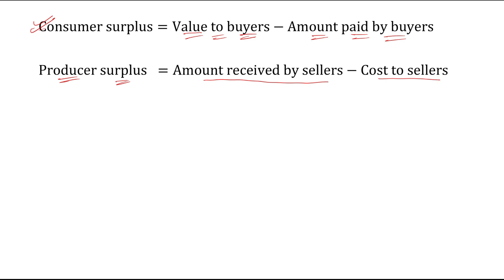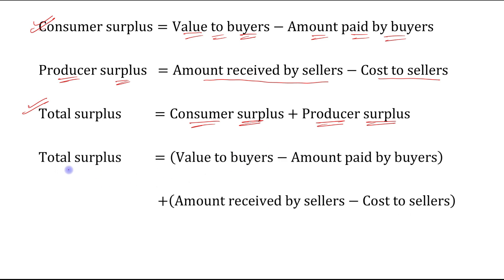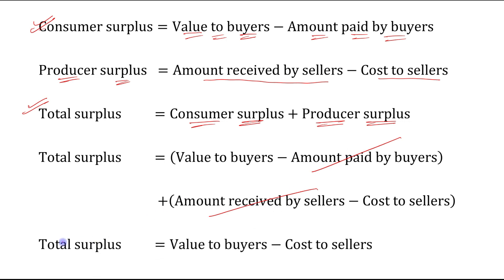Total surplus will be equal to the sum of consumer surplus and producer surplus. That means total surplus equals value to buyers minus amount paid by buyers, plus amount received by sellers minus cost to sellers. Now, the amount paid by buyers will be equal to the amount received by sellers, so these terms cancel out.